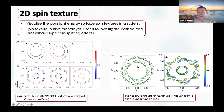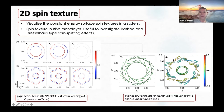Right now we only consider a two-dimensional projection, which is why the arrows in the plot change magnitude—they are changing direction along the Z axis, for example.